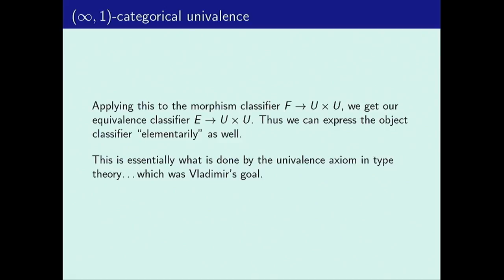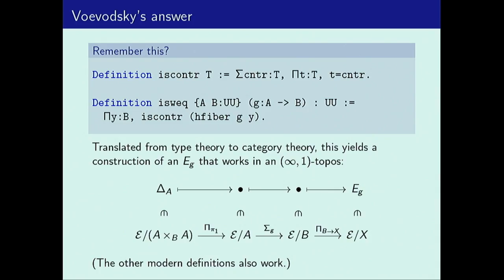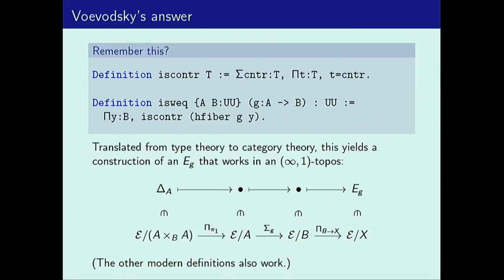This gives us an equivalence classifier, and therefore gives us an elementary or finitary way to express the object classifier in terms of a univalent fibration. Essentially, saying that E is equivalent to the diagonal was Vladimir's goal in introducing this definition — to express the univalence axiom as a property of a universe inside of type theory. The univalence axiom says that equalities or paths are equivalent to equivalences. But he had to give a coherent definition of equivalence in order to make that consistent.